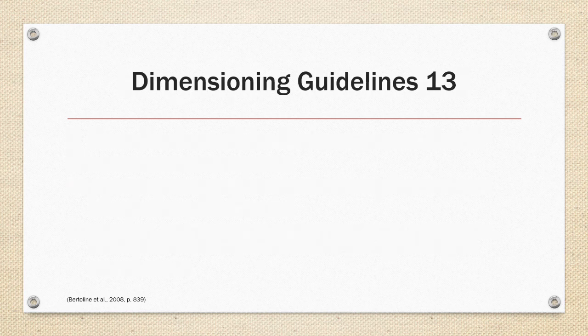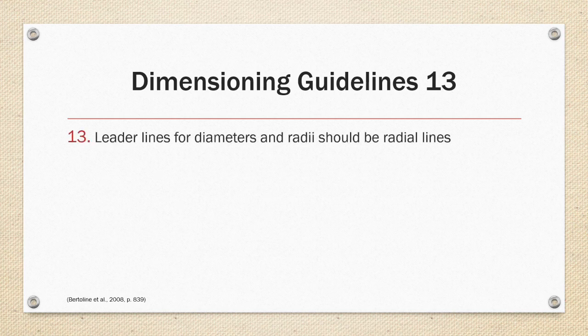And last but not least, the final guideline is number 13. Drum roll please. Leader lines for diameters and radii should be radial lines. Remember this list and use it as a checklist when you are proofing your drawings or checking the work of others.